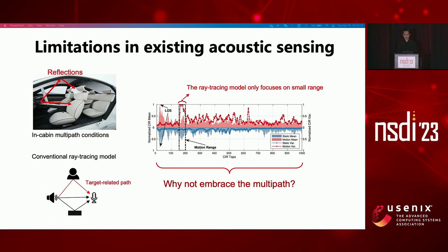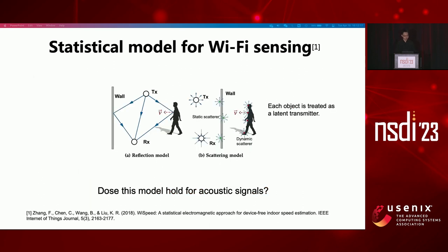So why not embrace all of the multipath information? Our model is inspired by statistical approaches in Wi-Fi sensing. Briefly, this work regards each object as a scatterer that transmits signals in all directions, and tries to find the statistical properties of wireless signals. Without tracing individual paths, this model can imply important information such as motion speed as well as breathing pattern. Considering this remarkable performance, we are wondering if this model can still hold for acoustic signals.